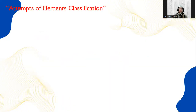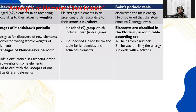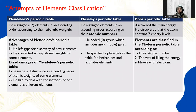Firstly, the attempts of elements classification. We know that three scientists tried to classify the elements. The first scientist is Mendeleev. Mendeleev tried to arrange the elements according to their atomic weight. The elements discovered in the time of Mendeleev were 67 elements, and he tried to arrange them in ascending order according to their atomic weight. While arranging them, there were some advantages and disadvantages for his periodic table.